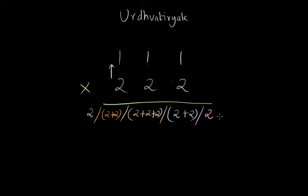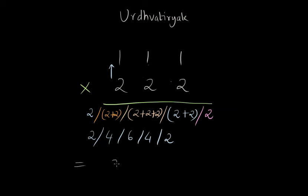Now we add all these results keeping the slashes — basically two, and four, then six, then four again, and two. The result of this multiplication is 24,642, by just writing these digits without the slashes. This is how we complete the multiplication of three-digit numbers.